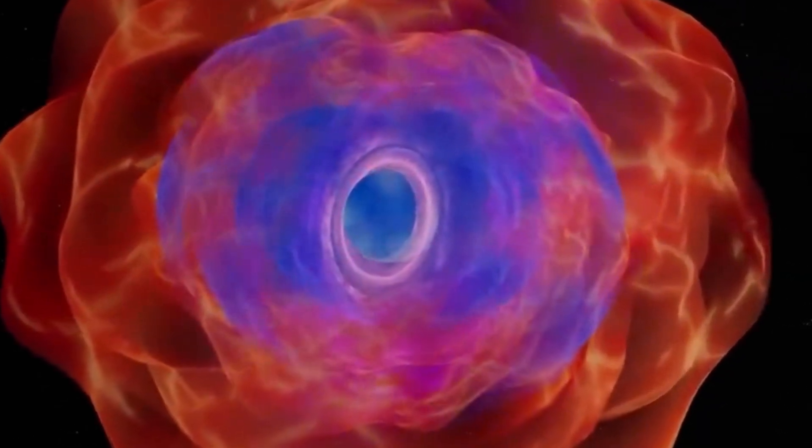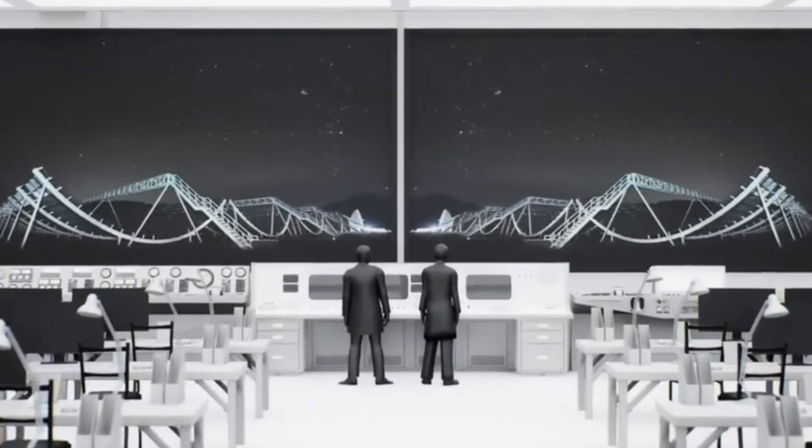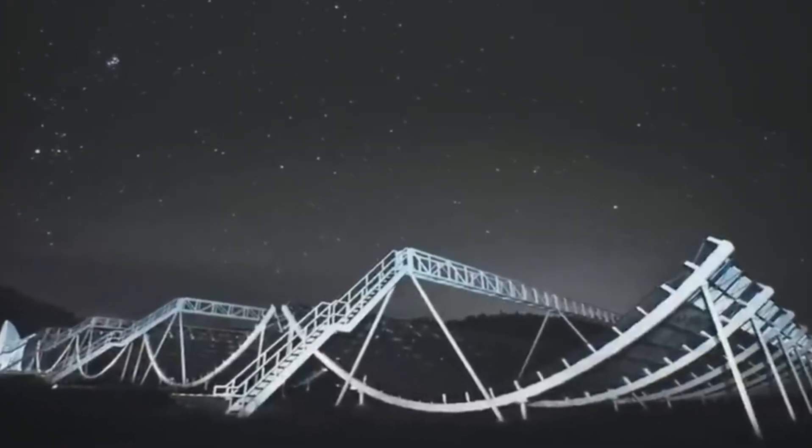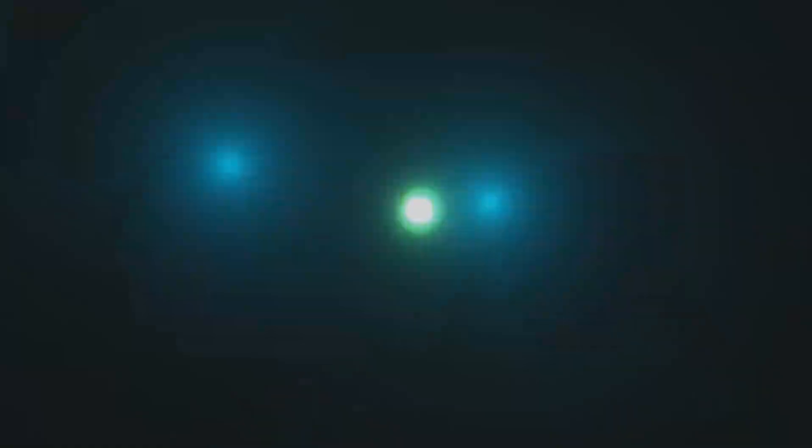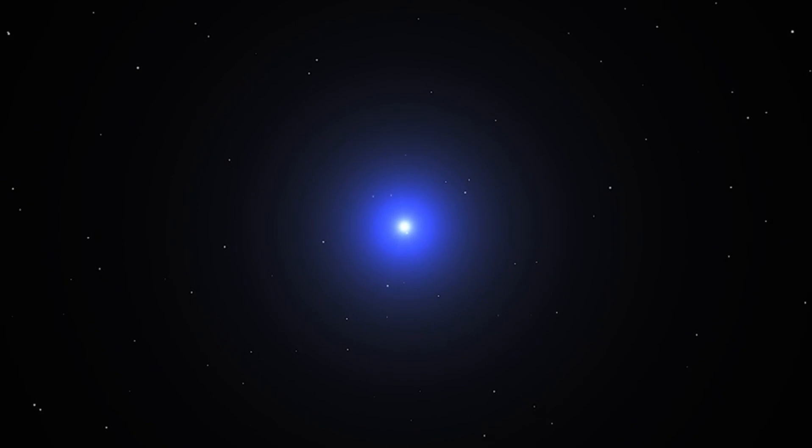Look at the cluster of other known neutron stars on this graph. They usually spin between 10 times a second to once every second. In comparison, our signal has a spin rate of once every 1318 seconds, over a thousand times slower than the typical pulsar.